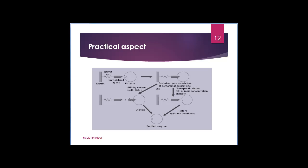Now we will discuss practically how we can perform this experiment. A column containing matrices attached with spacer arm and immobilized ligand is equilibrated with the mobile phase. The enzyme you need to separate from the mixture is then passed through the affinity column. This allows the enzyme to bind to the ligand, while all other unwanted material without affinity for the ligand moves with the mobile phase. The bound enzyme can then be eluted from the column by two methods: affinity elution and non-specific elution.